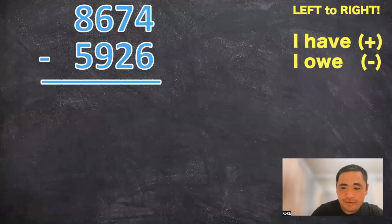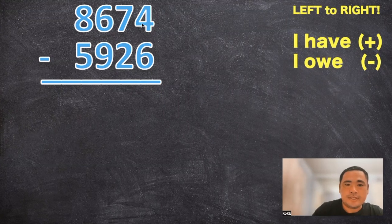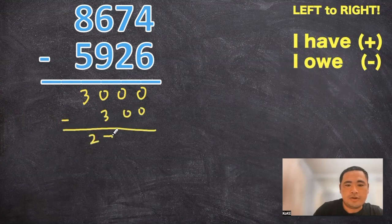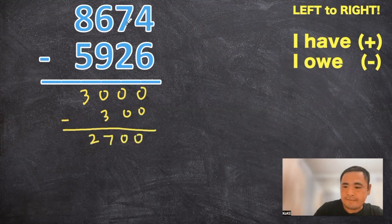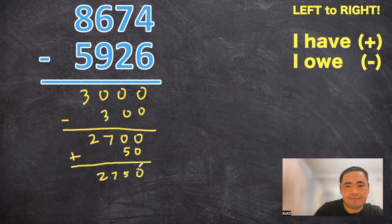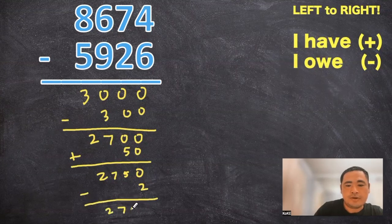So subtraction is probably going to be the most different from what you've ever seen with the concept of I have and I owe. So follow me. I have eight thousands. I owe five thousands. I still have three thousands. I have six hundreds. I owe nine hundreds. I still owe three hundreds. Mental math two thousand seven hundred. I have seven tens. I owe two tens. I still have five tens. Mental math two thousand seven hundred and fifty. I have four ones. I owe six ones. I still owe two ones. Mental math two thousand seven hundred and forty eight.